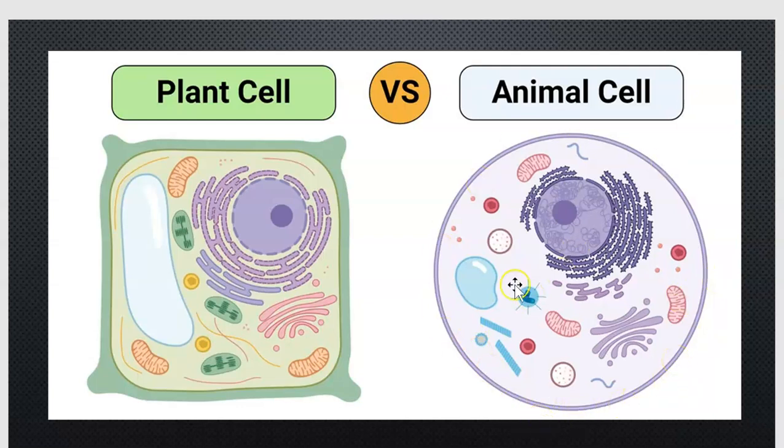You can see other organelles that are obviously very similar. One that serves a similar job in both cells but looks different are these vacuoles. Think of them almost like little storage bubbles. These vacuoles can hold food or they can surround and contain waste.